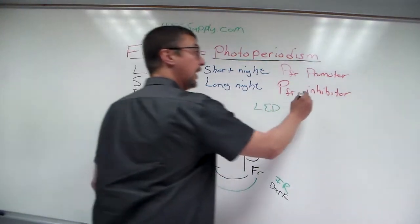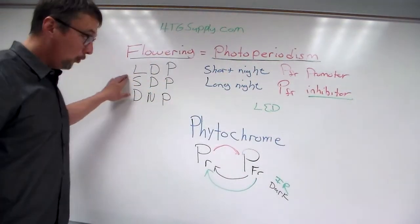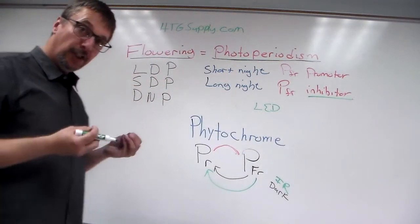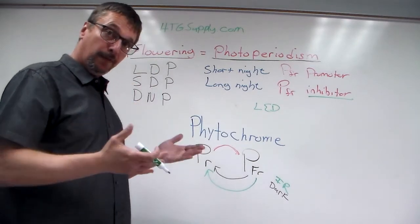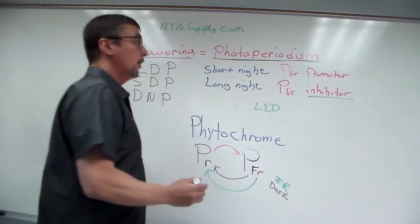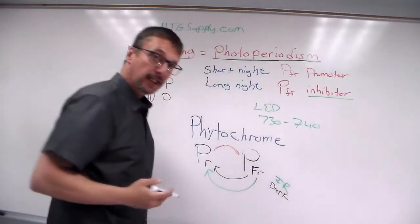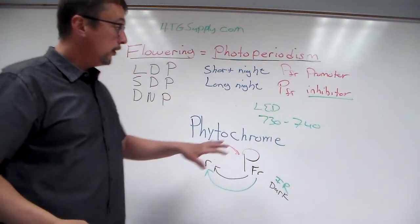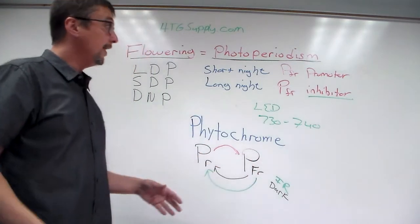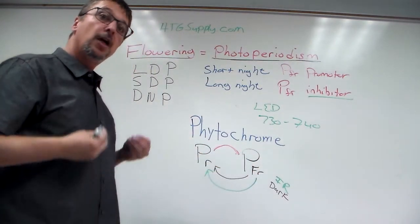And since this is an inhibitor in short day plants, that means by giving your plants a little bit of infrared light, maybe right before the dark cycle, that would be light that's about 730 to 740 nanometers, that will destroy some of the phytochrome far red and that will encourage your plants to flower faster.